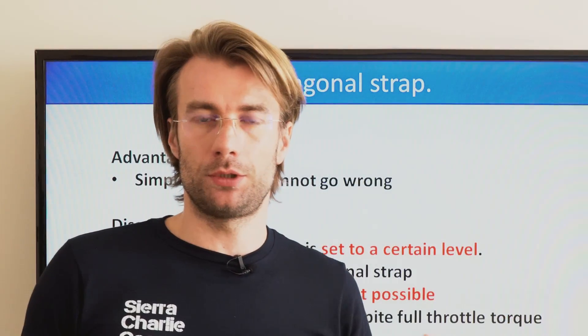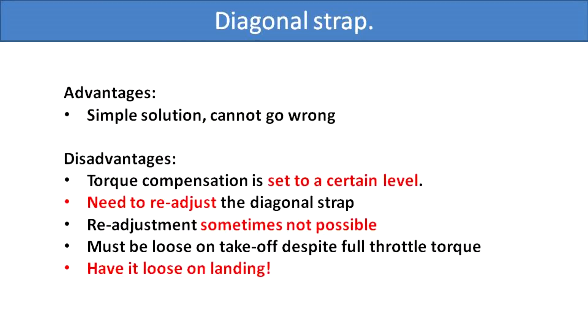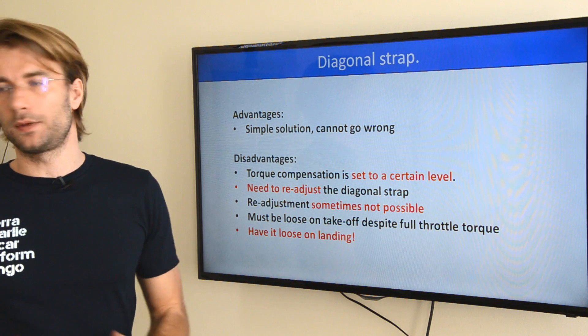So the final summary. Torque compensation on a high suspension unit is done by a diagonal strap, which is a great super simple solution. Basically nothing can go wrong with it.